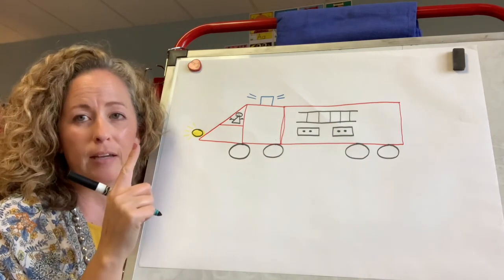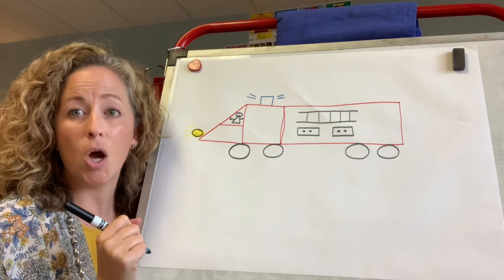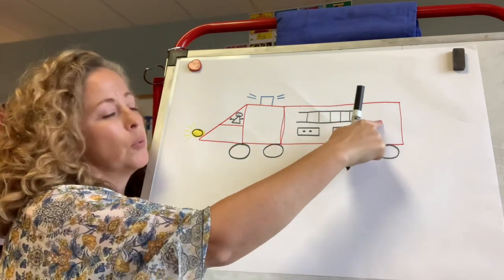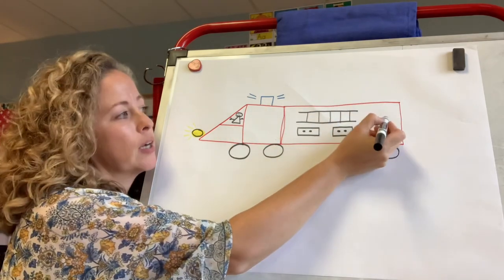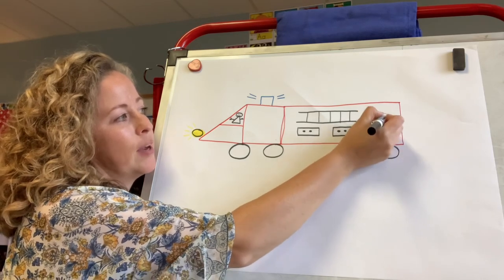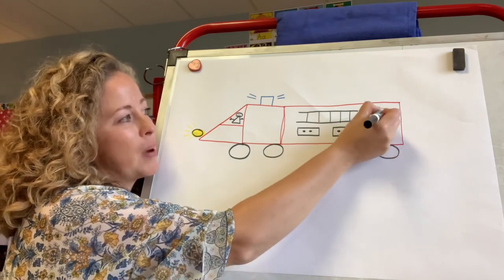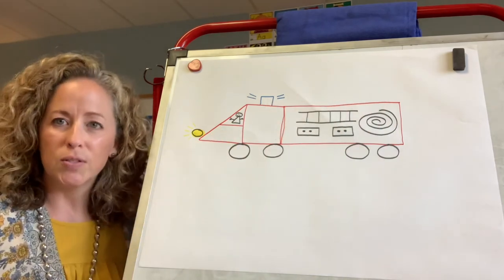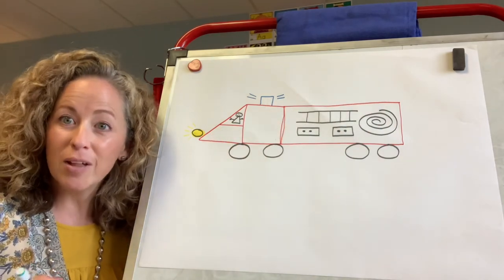One more thing, a firetruck always has a hose. So at the back of the firetruck I'm going to start in the middle and go around and around and around to make a spiral hose. Do you like my firetruck?